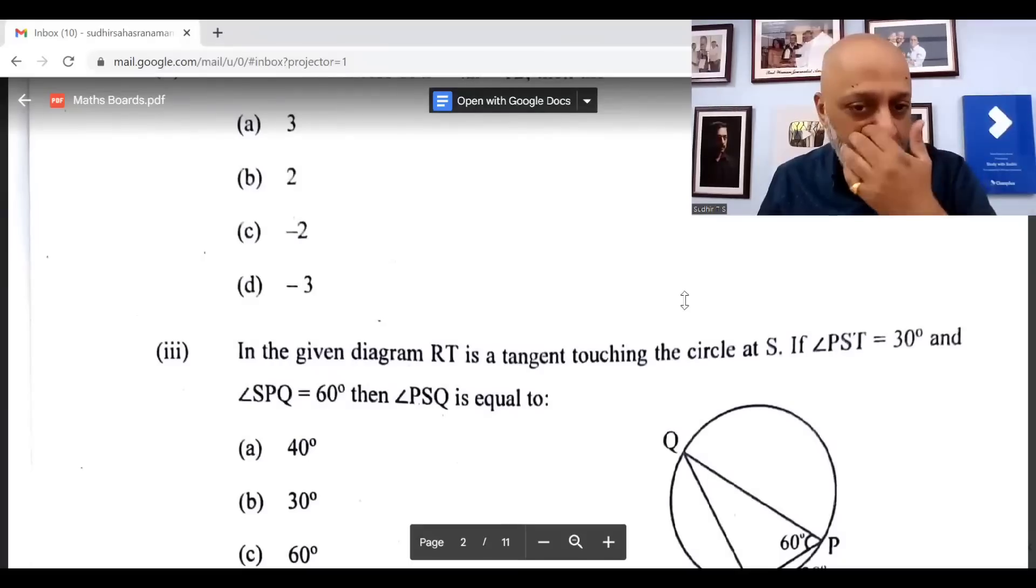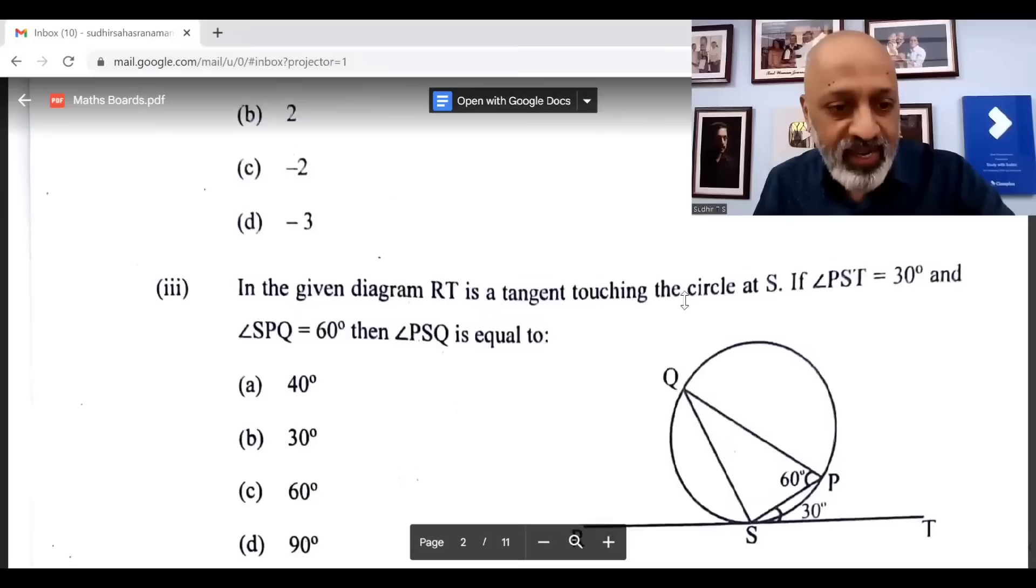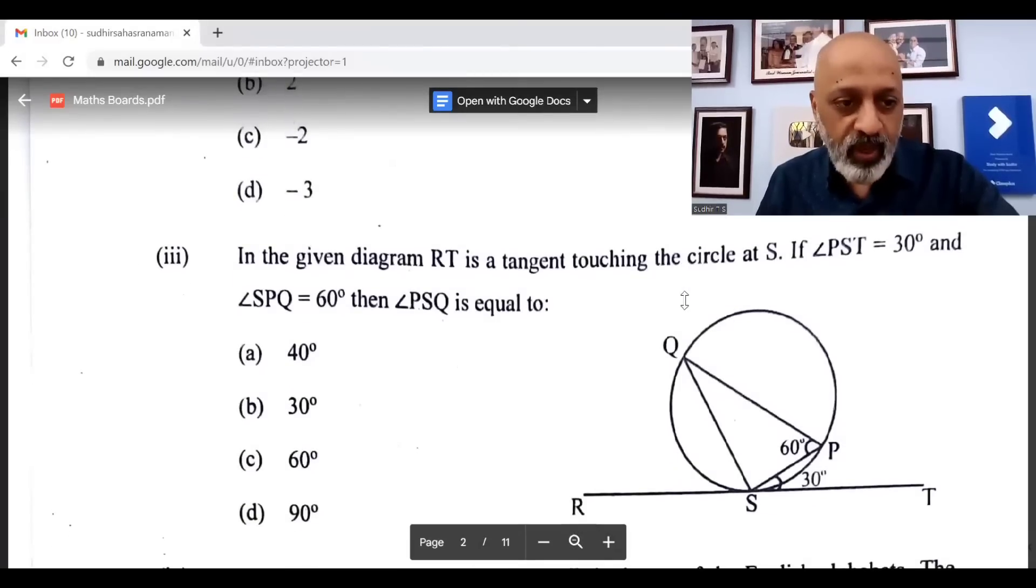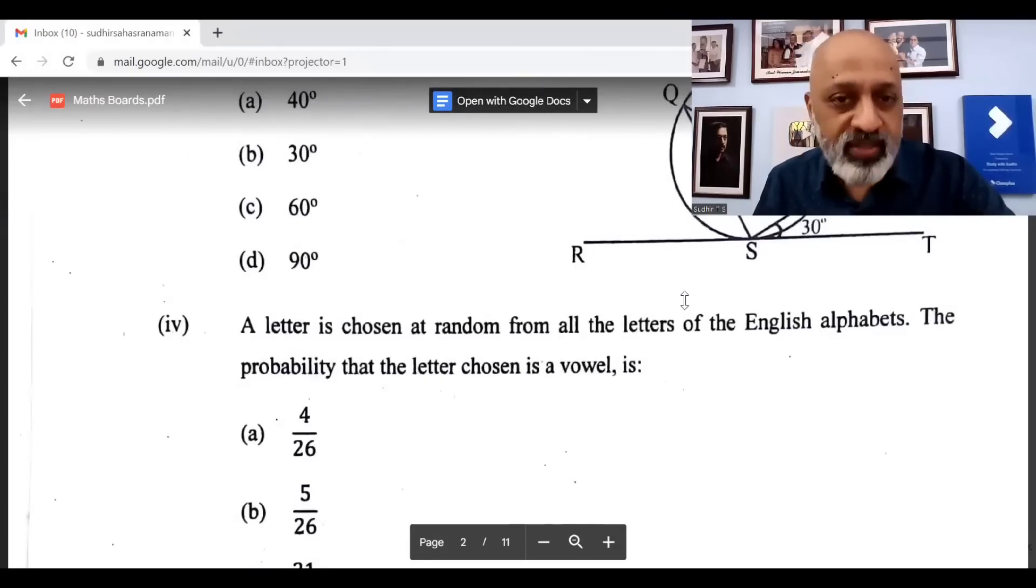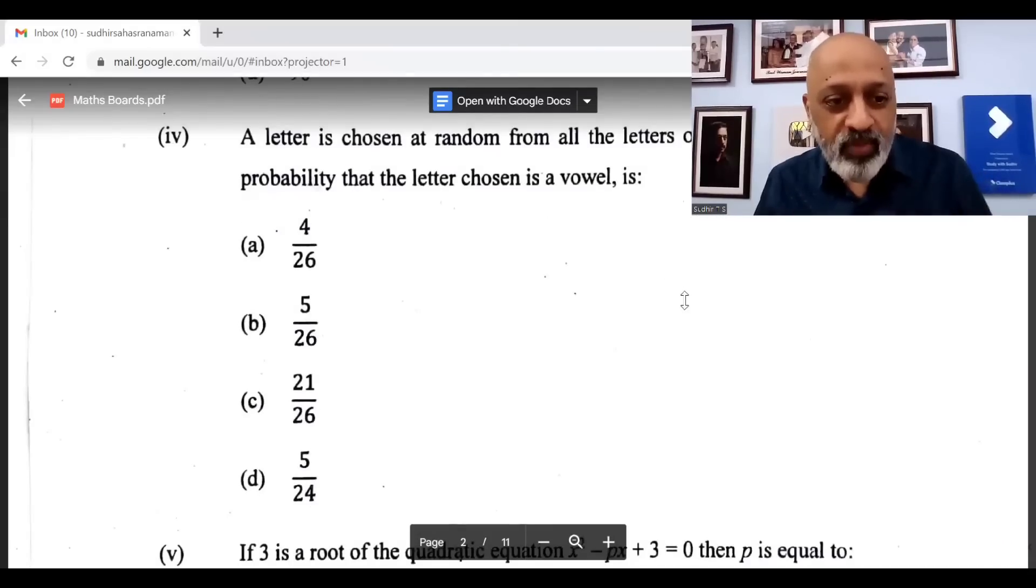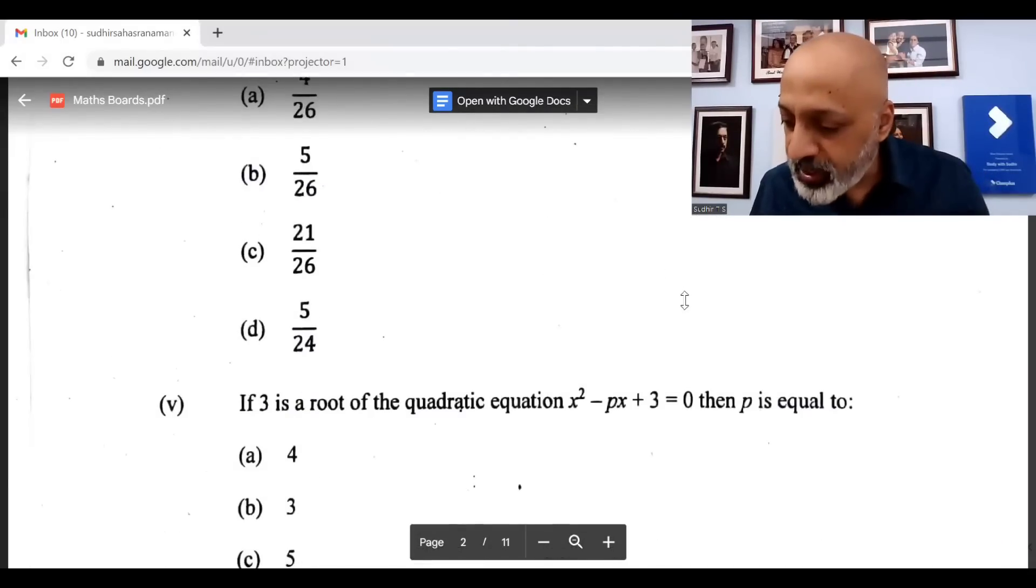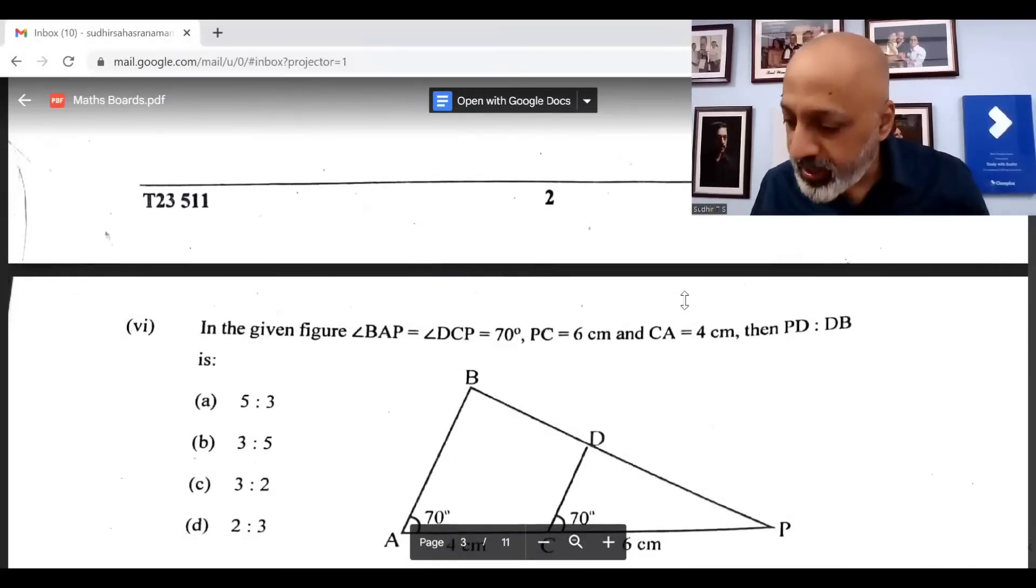The third question, in the given diagram R is a tangent, the correct option is D: 90 degrees. Fourth one: a letter is chosen at random from all the letters of the English alphabets. The probability that the letter chosen is a vowel is option B: 5 by 26, five vowels. The fifth question, the correct option is A4.